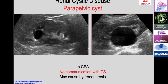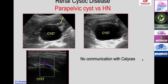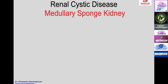A cyst can be parapelvic in location, appearing in the central echogenic area and potentially mimicking hydronephrosis. However, there is no communication with the calyces, the location is eccentric, the parenchyma is seen on one side, and the renal pelvis can be seen separately from the cyst. These are the diagnostic features for a parapelvic cyst.